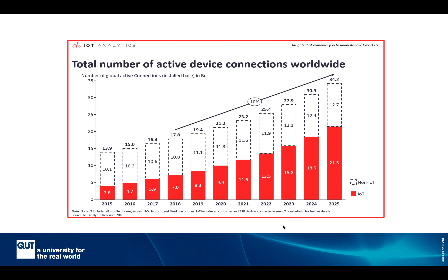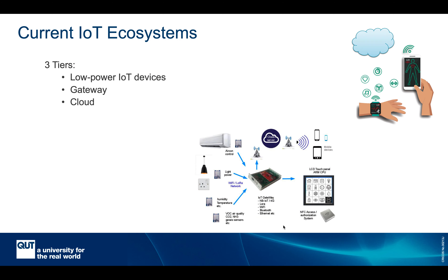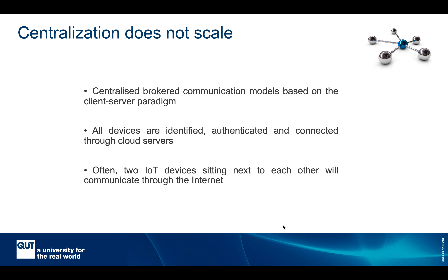The Internet of Things has received tremendous attention in recent years. As you can see from the diagram, the number of active IoT devices is growing significantly. The current existing IoT ecosystems rely on a three-tier architecture where low-powered IoT devices are connected through a gateway to cloud storage or cloud service providers, where they receive services. The gateway is there to handle resource-consuming tasks for the low-powered IoT devices, which have limited resources available.